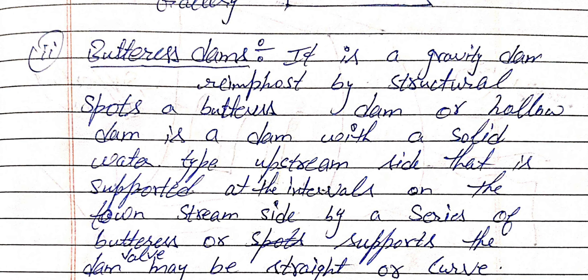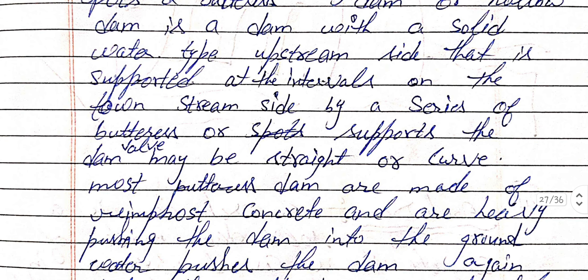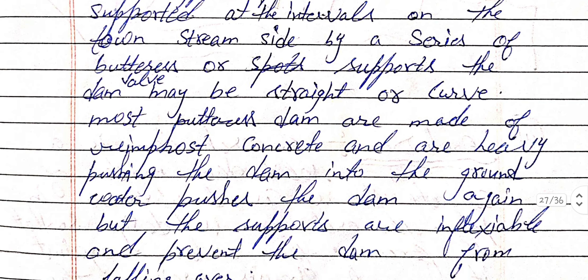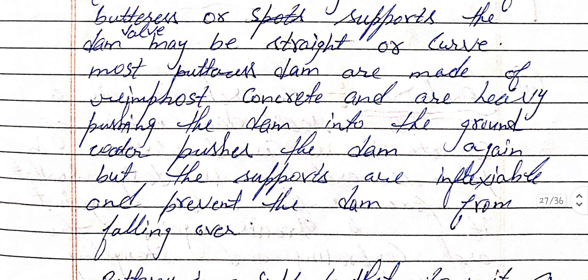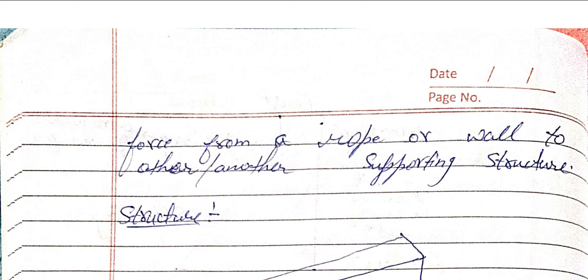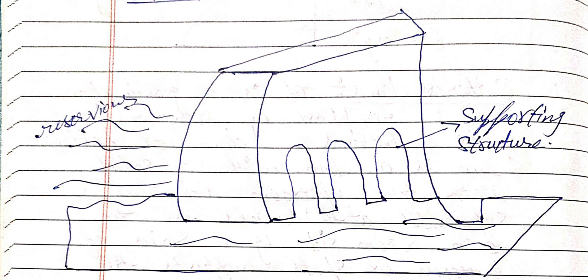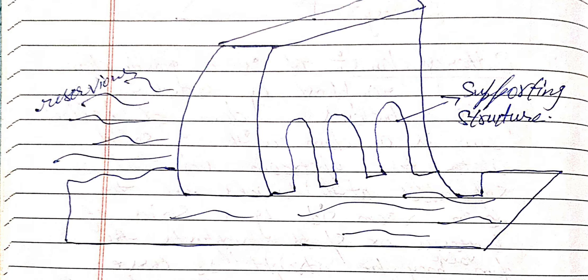Next is the buttress dam. It is a gravity dam reinforced by structural supports. A buttress dam, or hollow dam, has a solid upstream water face that is supported at intervals on the downstream side by a series of buttresses or supports. The dam walls may be straight or curved. Most buttress dams are made of reinforced concrete. Water pressure pushes the dam into the ground, but the supports are inflexible and prevent the dam from falling over. A buttress is a support that transmits force from a roof or wall to another supporting structure.